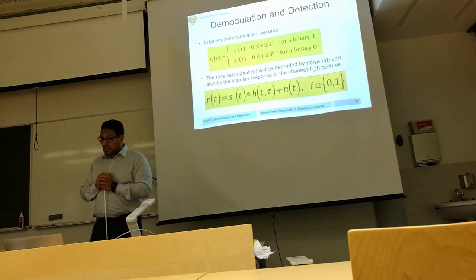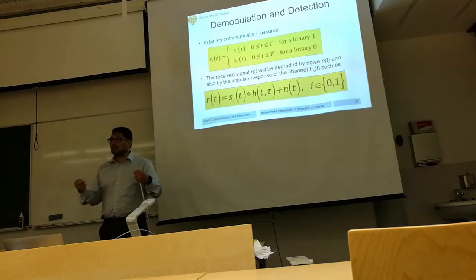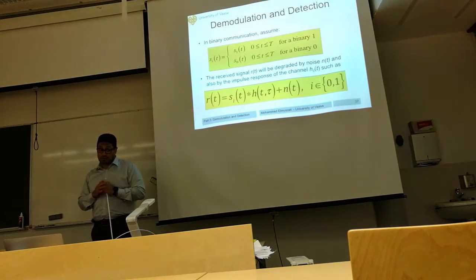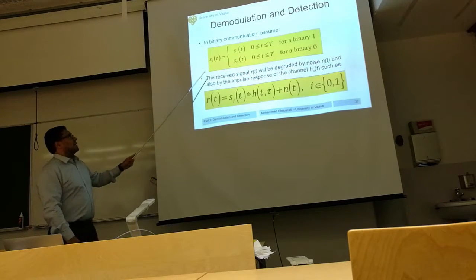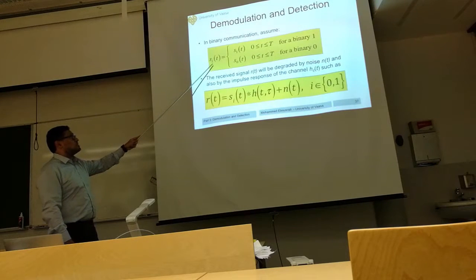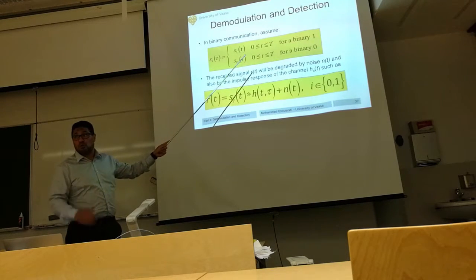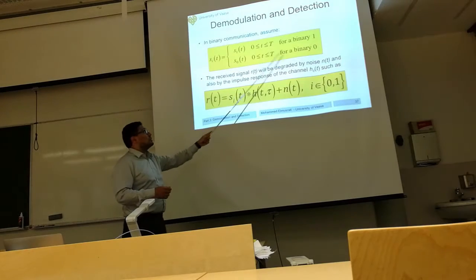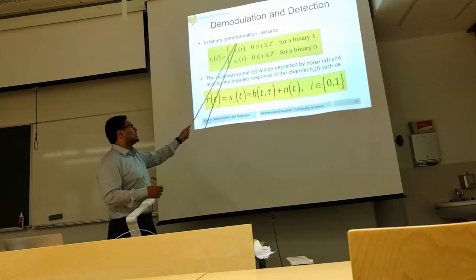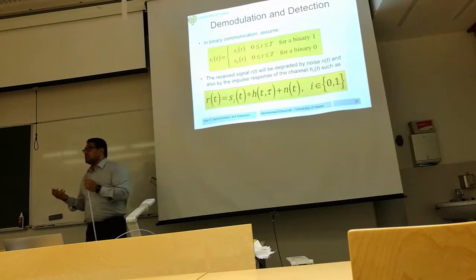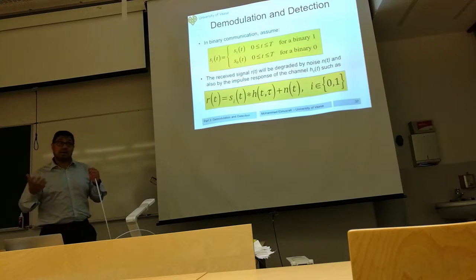Today we study the detection process of a binary system, and then we show the concept of distances and vectors in this binary system. In the binary system, the received signal I(t) could be either S1 or S0. It depends on the transmitted symbol — binary 0 when we send S0(t), or binary 1 when we send S1(t). The change of the symbol can be in the transmitted signal frequency, phase, or magnitude.